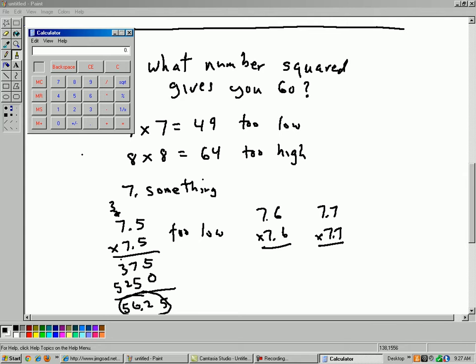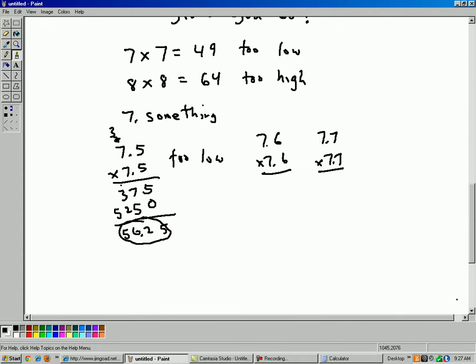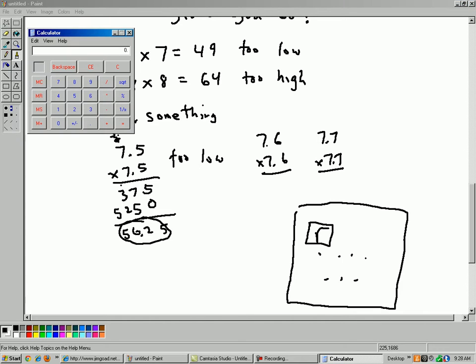Most calculators have a square root button. Most calculators have the actual symbol. I'll just draw a little picture. Most calculators, you know, you have your buttons over here and somewhere you have a button with a little square root sign on it. So you just type 60, hit the square root button and you get the answer. The calculator on this computer here, the square root button is right there. And so you'd have to go 60, hit the square root button, and there it is, 7.74596669241.